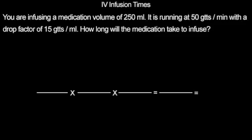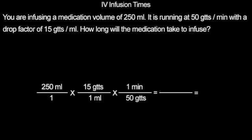When setting up our equation, we first start with our volume of 250 milliliters. We then multiply that by our drop factor of 15 drops per milliliter, and multiply it again by our speed of 50 drops per minute. We cancel like terms and multiply across. We end up with 3,750 minutes over 50. When you divide, you get 75 minutes. The medication will take 75 minutes to infuse.